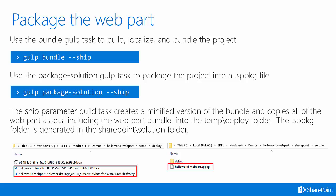The package web parts step is what comes next. You'll use the gulp bundle task to build, localize, and bundle the project. Use the package-solution gulp task to package the project into a .sppkg file. Both of these commands are shown here on the slide. The --ship parameter build task creates a minified version of the bundle and then copies all the web part assets, including the web part bundle, into the temp/deploy folder. You can see this in the bottom left screenshot on this slide.